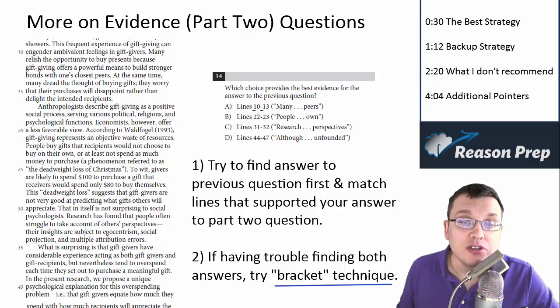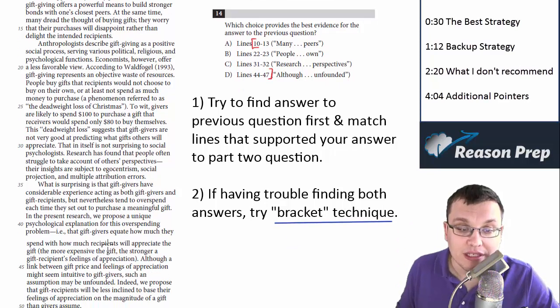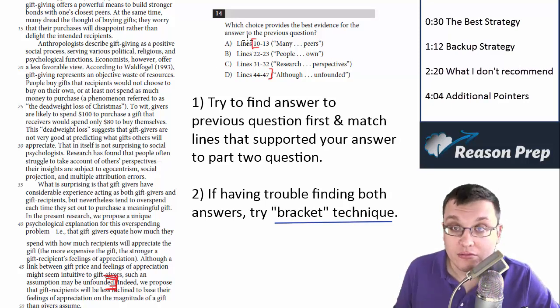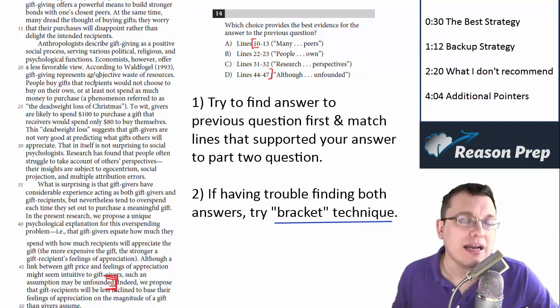You see that the answer is going to be somewhere between line 10 and 47. So I'm going to put brackets from 10 to 47, then reread the passage paying special attention to these lines, because the answer's got to be somewhere in here. Given that I have these lines in the choices, one of them has got to be right. So I read this section and do questions 13 and 14 at the same time. That's the backup strategy if you're having trouble finding the answer to both questions.